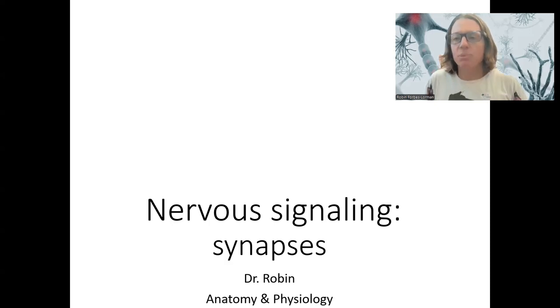Now that we've gotten the action potential down the axon, it's going to reach the axon terminal, and we're going to have to have a way to communicate with another neuron. A synapse can be with a muscle cell or a gland as well, but we're going to be looking at it from neuron to neuron communication, that being a synapse.